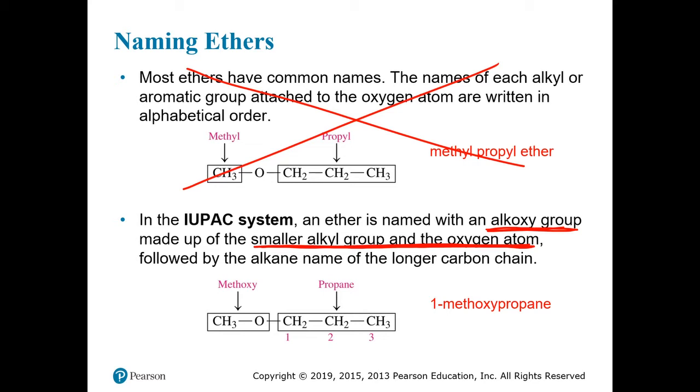And then this is a substituent to the longer carbon chain, which we consider to be the base name or the root name of the compound. In this example down here, we see the oxygen bridge between the two halves. One chain is three carbons long, and one chain is just a single carbon. So, the longer carbon chain is considered to be the root name, and that's taken as propane.